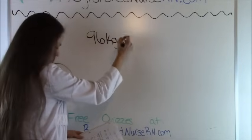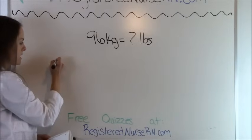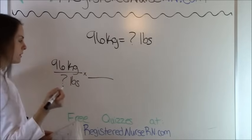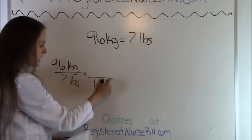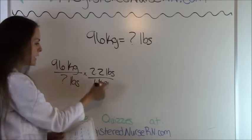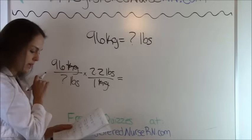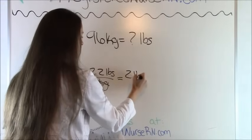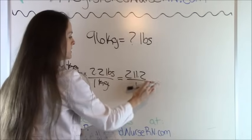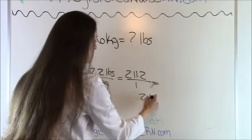96 kilograms equals how many pounds? We set up: 96 kilograms equals how many pounds. From the metric table, we know that 1 kilogram equals 2.2 pounds. We cancel out kilograms. Multiply on top: 96 times 2.2 equals 211.2. The bottom is just 1. So 211.2 divided by 1 equals 211.2 pounds.